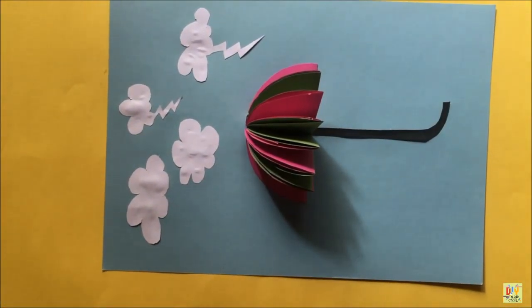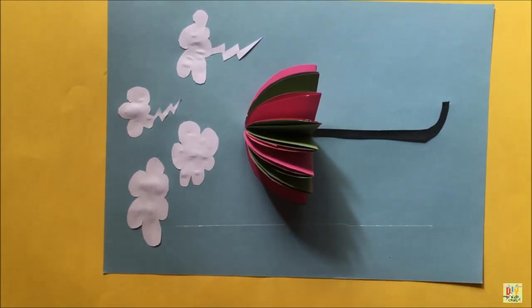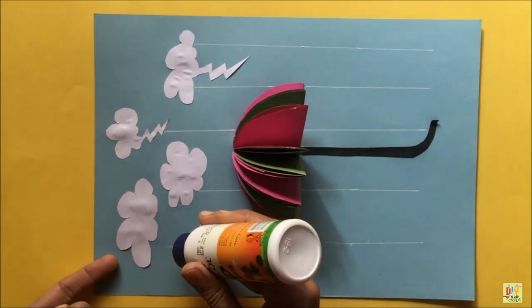We're almost done making the umbrella. We just need to add some rain effects. Get our ruler and draw a line under the clouds. Then, remember the cut-up straw.